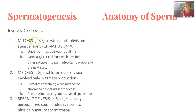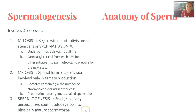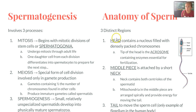Spermatogenesis involves three processes. It starts with mitosis — mitotic divisions of stem cells called spermatogonia. They undergo mitosis through adult life, and one daughter cell for each division differentiates into spermatocytes, preparing for the next step: meiosis. This special form of cell division produces immature gametes called spermatids, each containing half the number of chromosomes. The last process is spermiogenesis, where small, relatively unspecialized spermatids develop into physically mature spermatozoa. Each sperm includes three distinct regions — a head, middle piece, and tail. The head contains a nucleus filled with chromosomes, and the tip has enzymes for getting into the egg. The middle piece has mitochondria to move the tail, which is the only example of a flagellum in the human body.